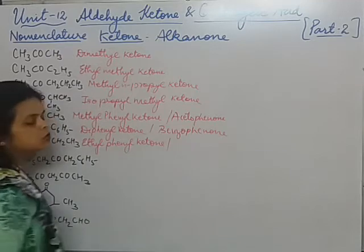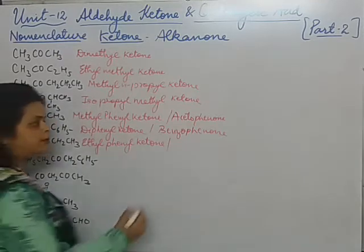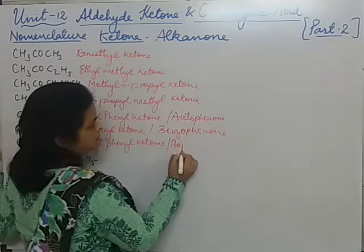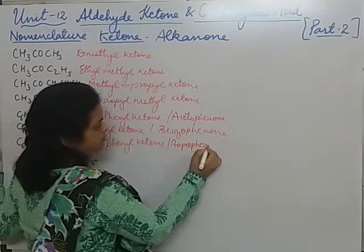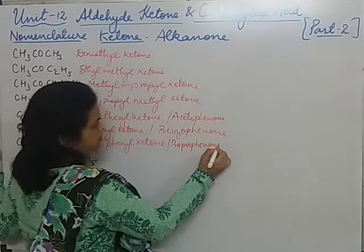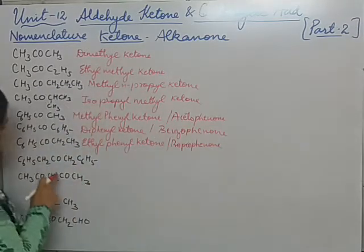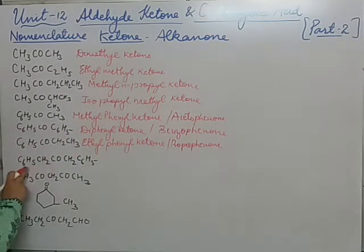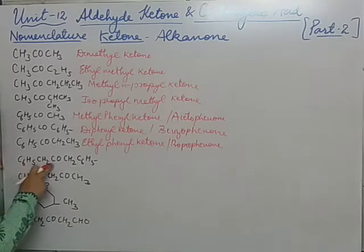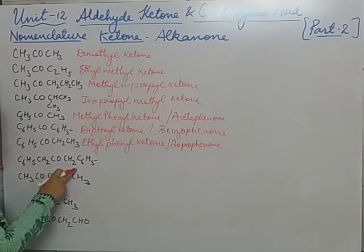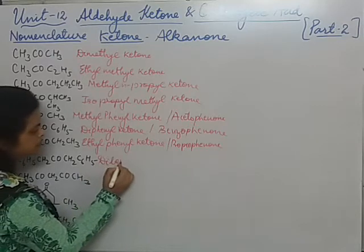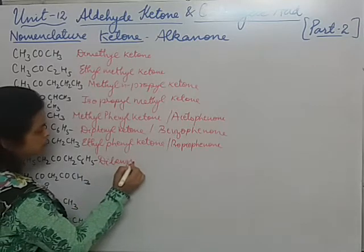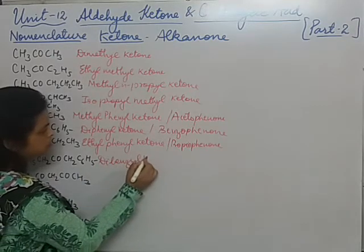This compound is also called propiophenone. Now here we are having C6H5CH2 — the benzyl part — then the ketone part, then again benzyl. So we will write dibenzyl ketone.